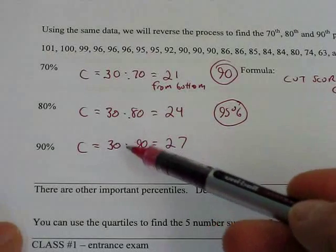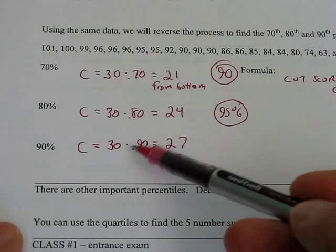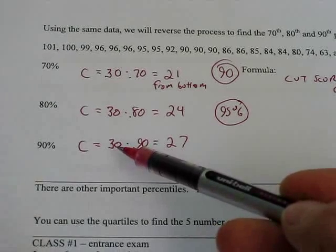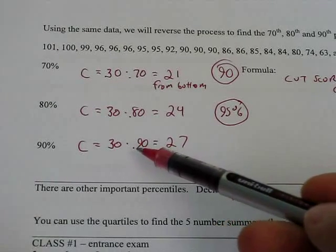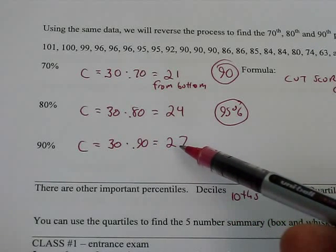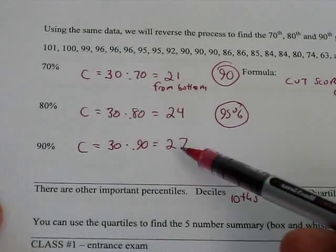To find that cut score for the 90th percentile, we would take our total, 30, or the number of items we have, our count 30, multiply it by a percent 90.